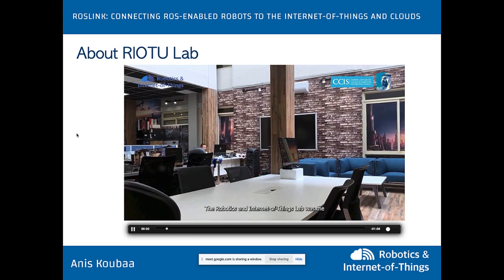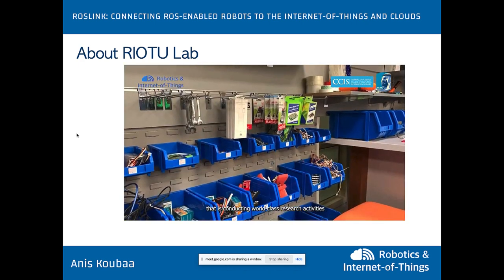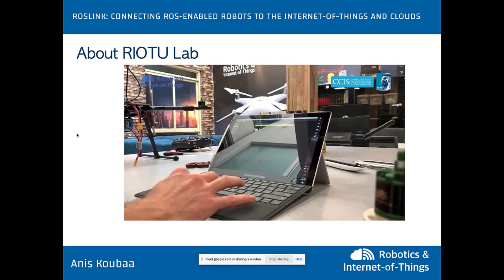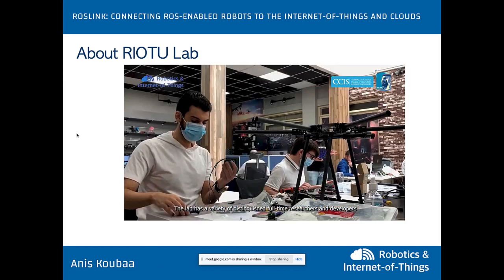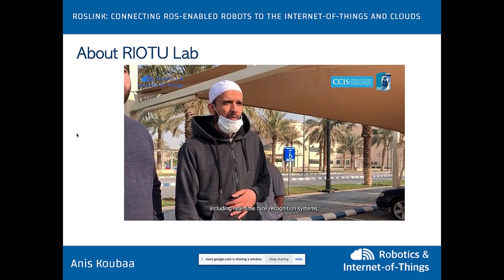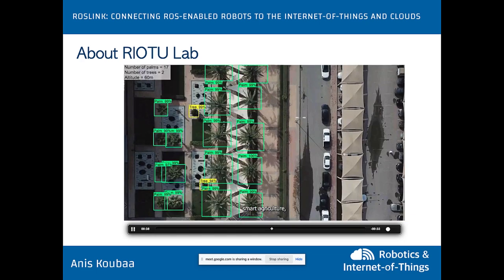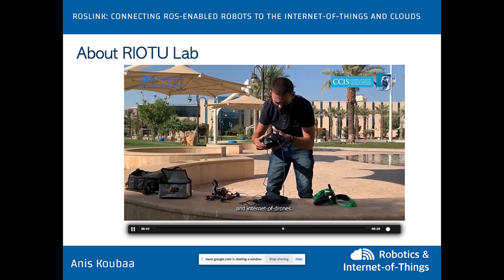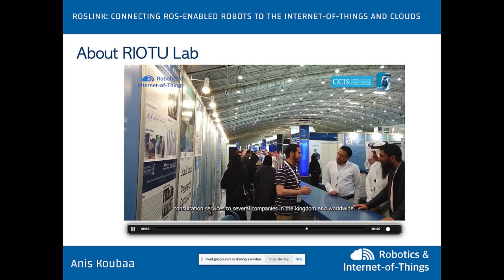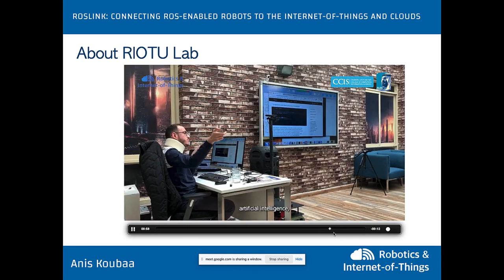The Robotics and Internet of Things lab, which I lead, was the first lab established at Prince Sultan University in 2017. We started with two or three people and now have 15 dedicated researchers. We work on artificial intelligence, drone systems, mobile robots, Internet of Things, cloud computing, and cybersecurity. Applications include vehicle identification, smart traffic analysis from drone images, palm counting, photogrammetry, and drone training.